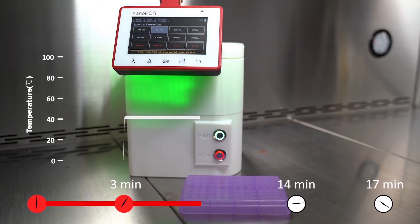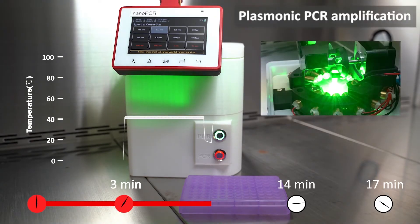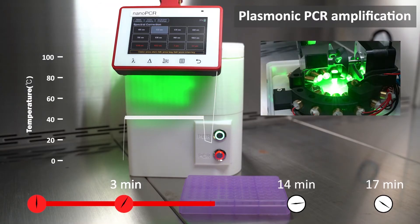In addition, the nano-PCR machine weighs only 3 kilograms and is very compact in size, which allows the device to be portable.